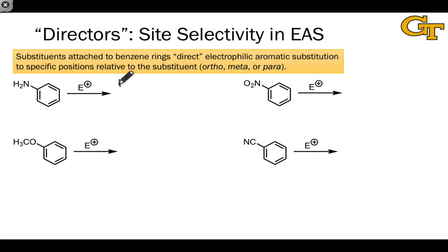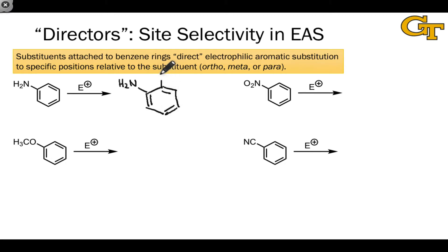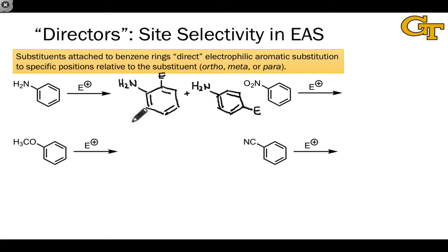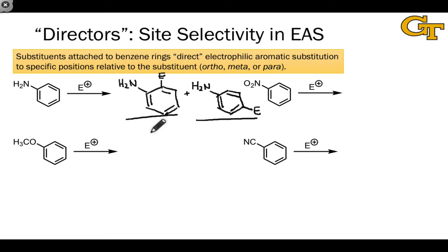When aniline reacts in electrophilic aromatic substitution reactions, we don't get a statistical mixture of the different possible products. Instead, we observe only two products — the ortho-substituted and the para-substituted — with essentially none of the meta-substituted product observed. And even within these two, we find more of one than the other. Often the para product is favored just on sheer steric grounds, since the ortho position is more hindered than the para position.